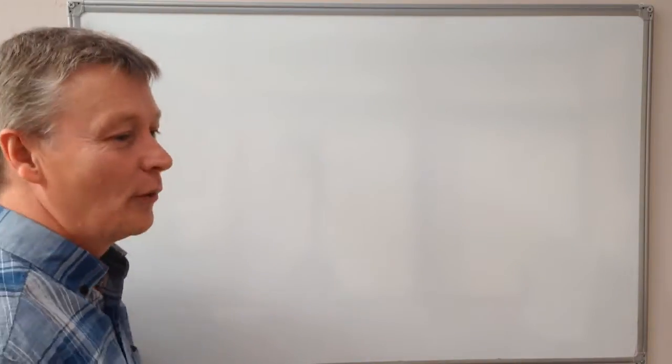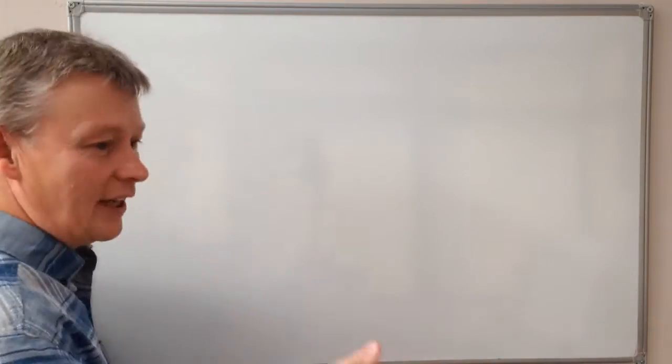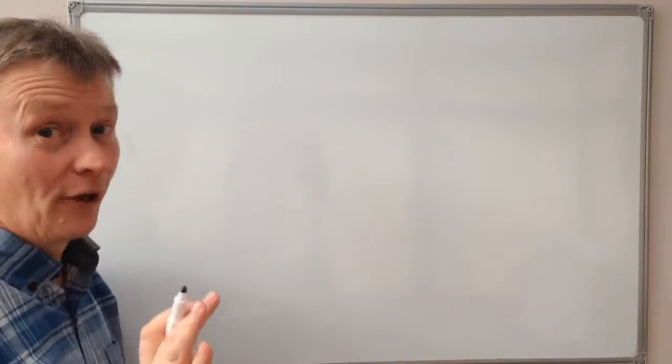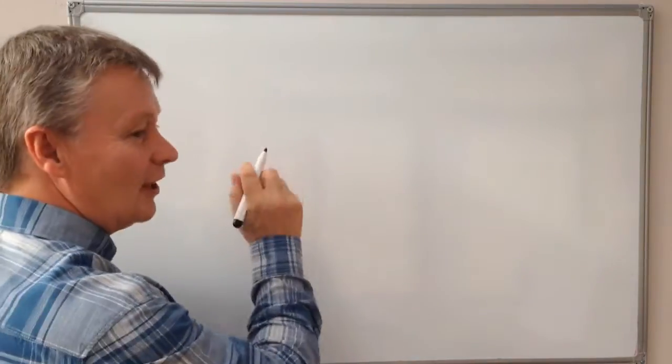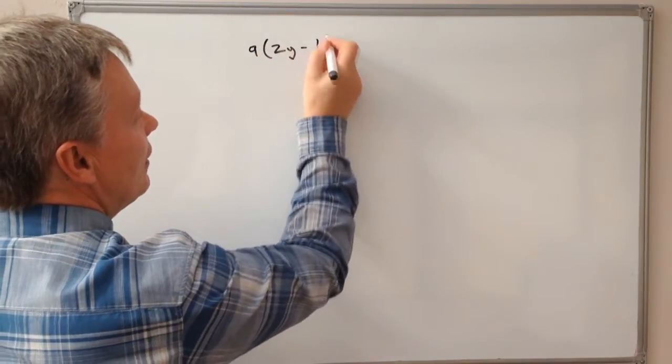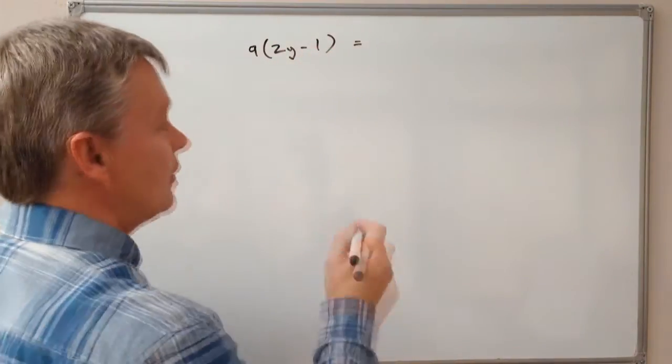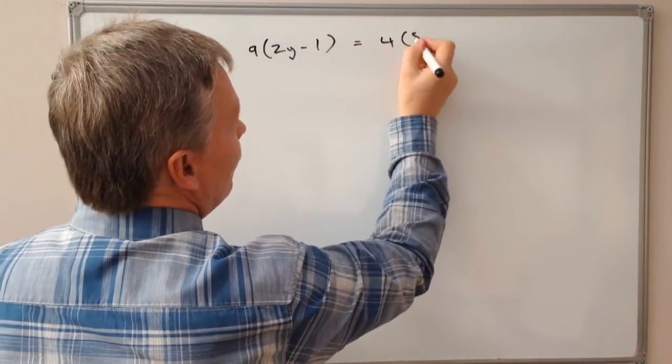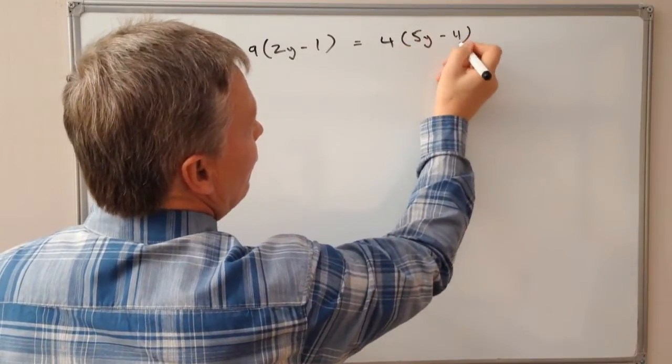In this particular case, we've got brackets and letters on both sides. It looks a little bit tricky when you first see it, but you've got something like 9(2y-1) equals 4(5y-4).